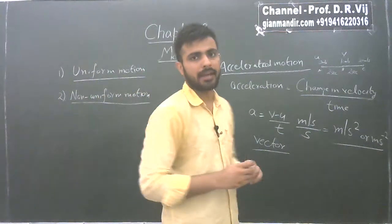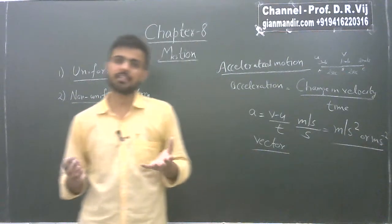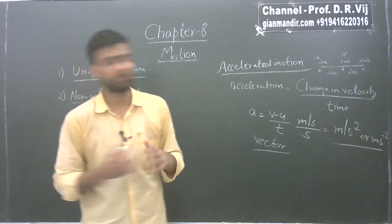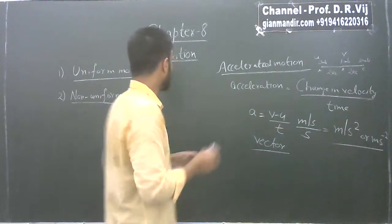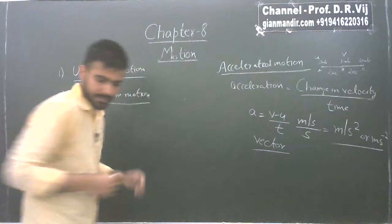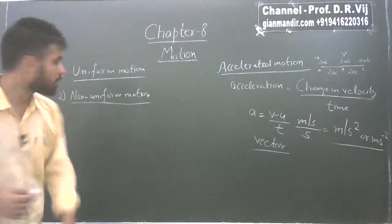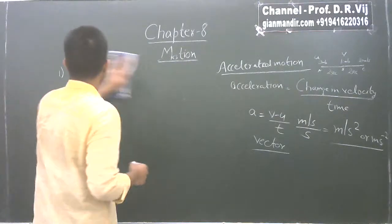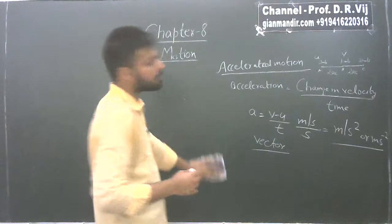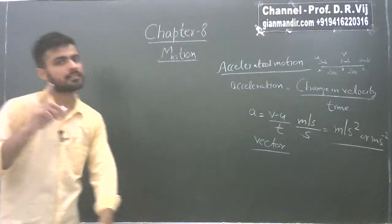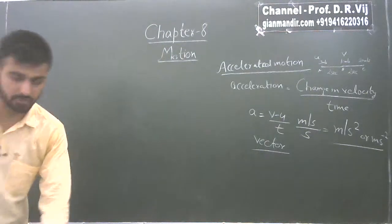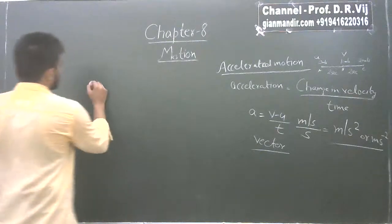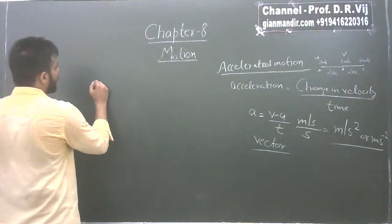Now, whether acceleration can be positive or negative — let's take an example. Remember that accelerated motion is also known as non-uniform motion. Let's say a car at point A was moving at 200 meters per second velocity.